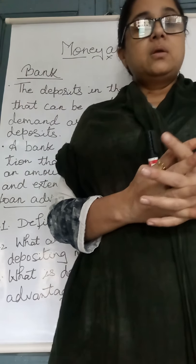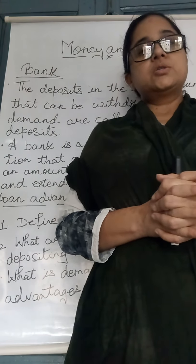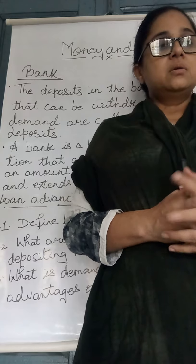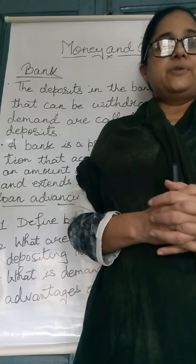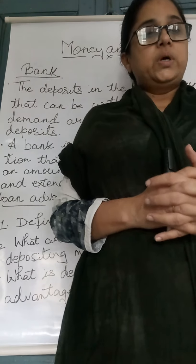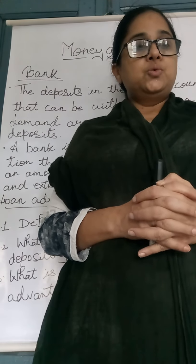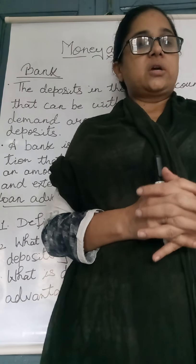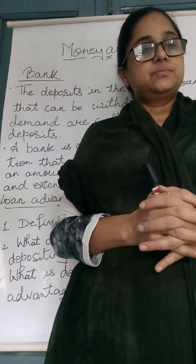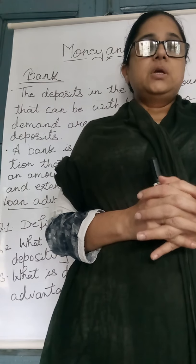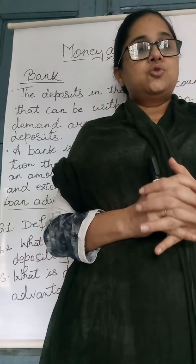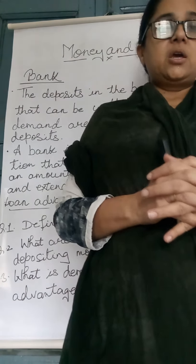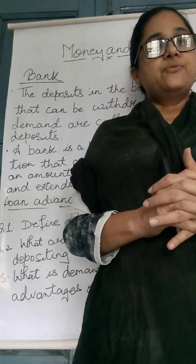Another example: Suresh Kumar wants to withdraw Rs. 50,000 in cash for making some payments. He will write a check instructing the bank to pay to self or bearer and will present the check to his own bank. After accepting the check, the bank will make the payment to Suresh Kumar. With this, Suresh Kumar's balance in his bank account will reduce by Rs. 50,000.